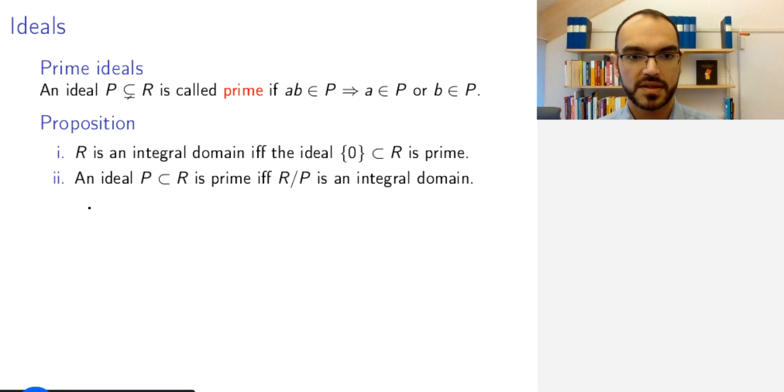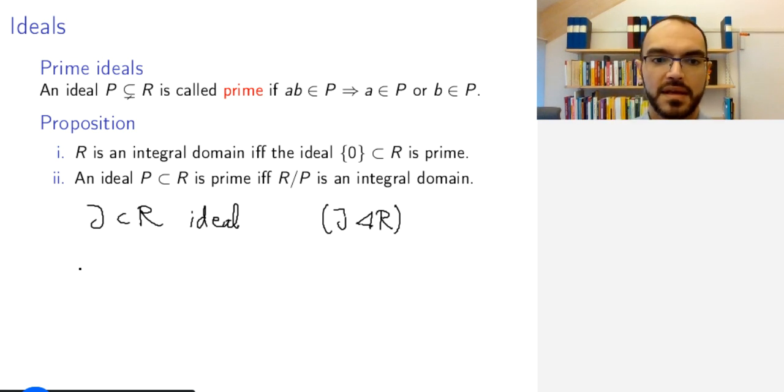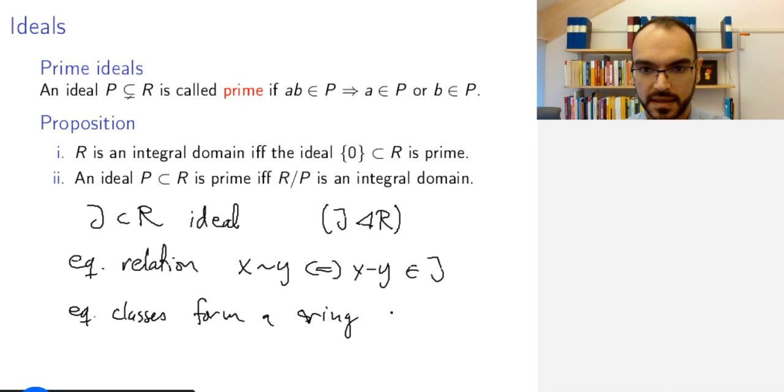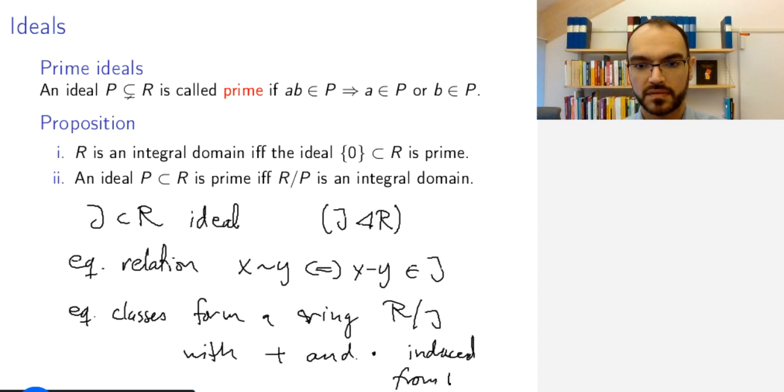Let me briefly remind you about quotient rings. If you have J an ideal in R, you can define an equivalence relation by setting x equivalent to y if and only if x minus y belongs to the ideal. So it's sort of equivalence modulo this ideal. Then equivalence classes form a ring, and this is the ring we denote R mod J, with the addition and multiplication induced from those of the ring.